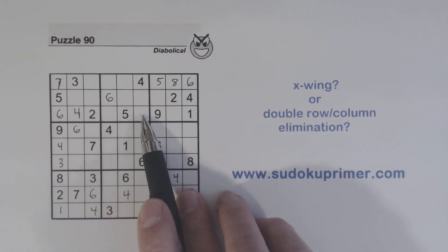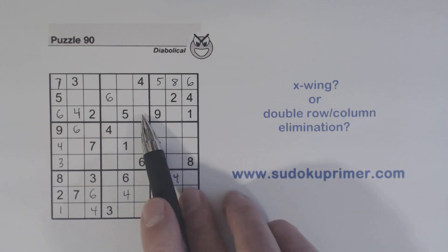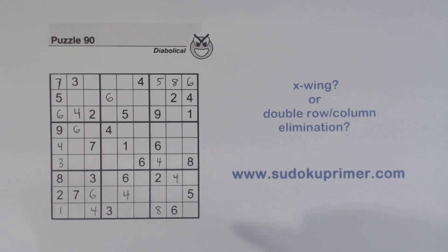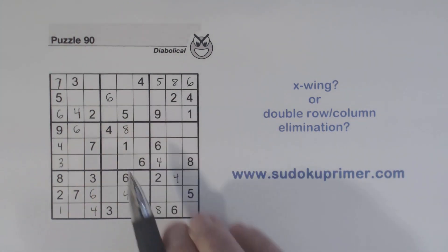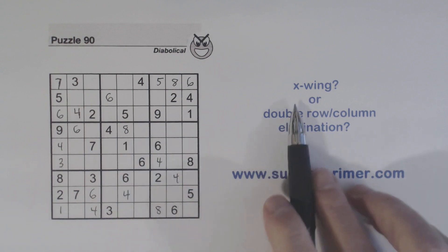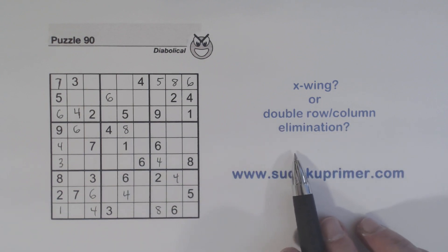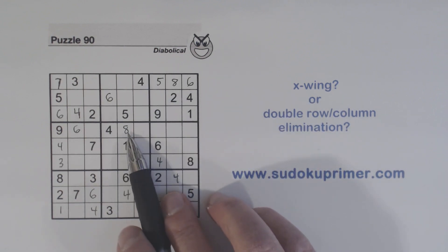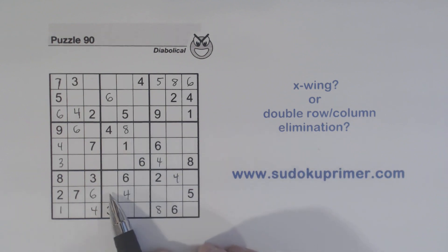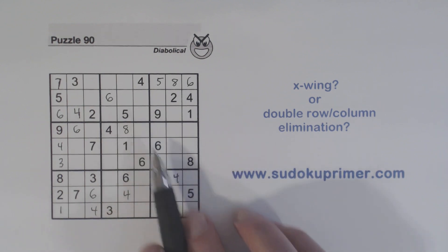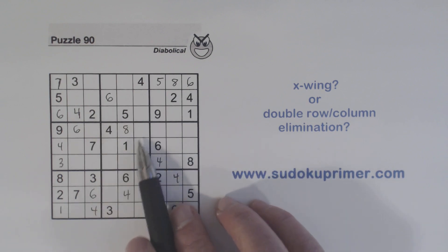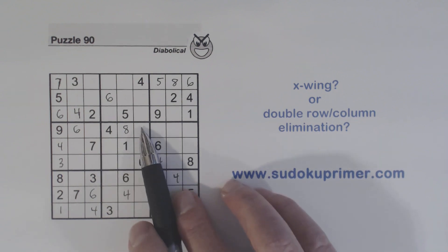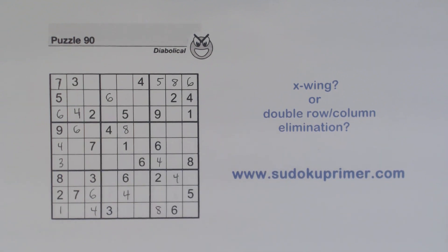So in this example we could use this as a double column elimination or we can use it as an X-wing. That is what I mean by X-wings and double row and column elimination being related but different. With double row and column elimination, we look to eliminate two of the columns, leaving only one column and one place for an 8. If we see this as an X-wing, what we do is eliminate candidates — we eliminate these three candidate 8's here. That's a good example of when you can use either of the two techniques.